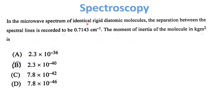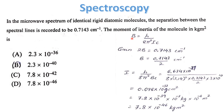In the microwave spectrum of identical rigid diatomic molecules, the separation between spectral lines is recorded as 0.7143 cm⁻¹. The moment of inertia is found using B = h/(8π²IC). The separation between spectral lines equals 2B = 0.7143 cm⁻¹, so B = 0.7143/2 cm⁻¹, and I = h/(8π²BC).